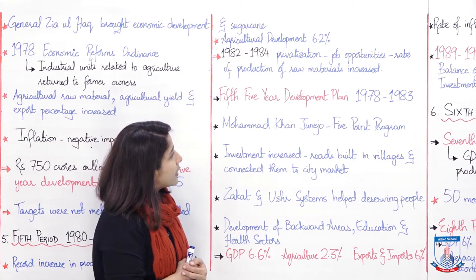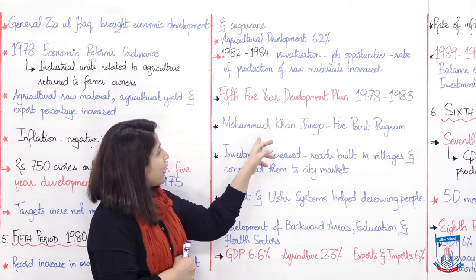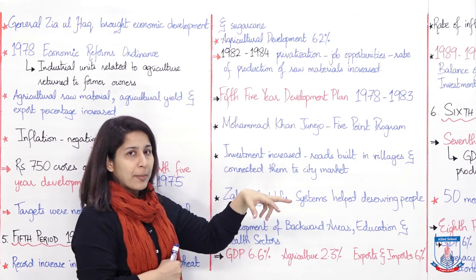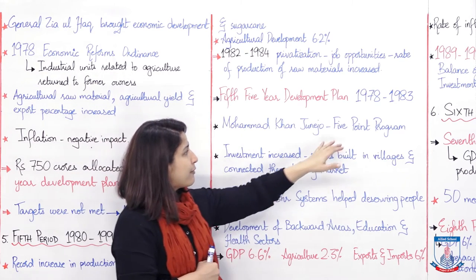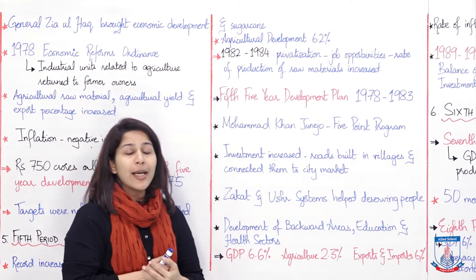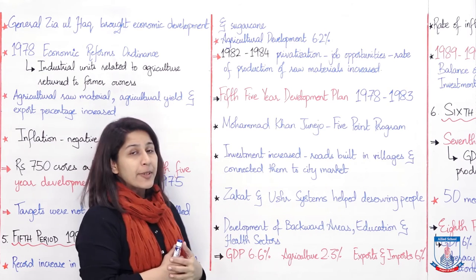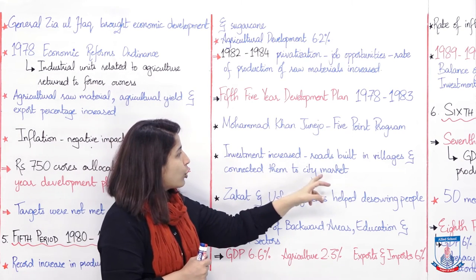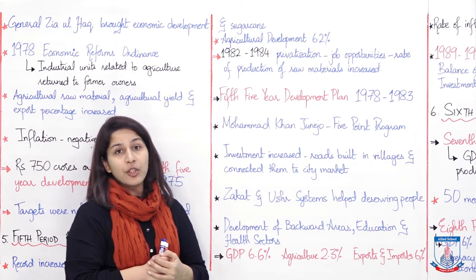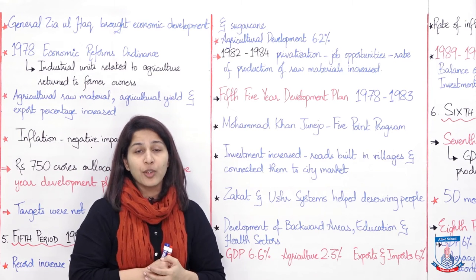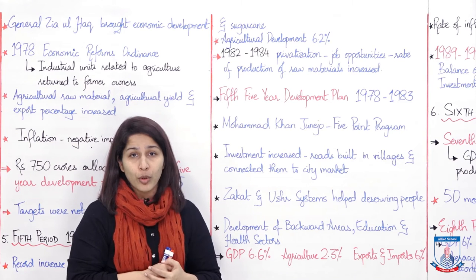Then came the Fifth Five-Year Development Plan, which ran from 1978 to 1983. Mohammad Khan Junejo was Prime Minister, and under him from approximately 1985 to 1988 a Five-Point Program was followed, which proved very beneficial. Investment increased because the private sector was promoted. Roads were built in villages and connected them to city markets, so villages where major farming took place were linked to urban markets, which also promoted the agricultural sector.